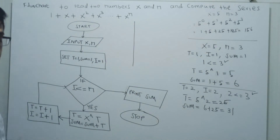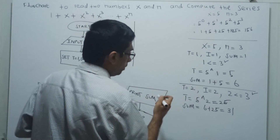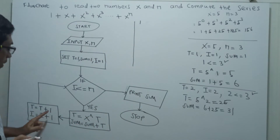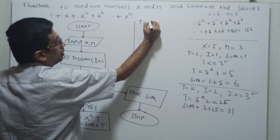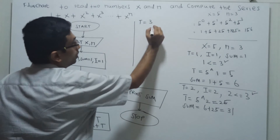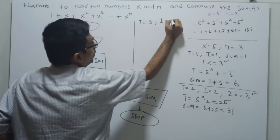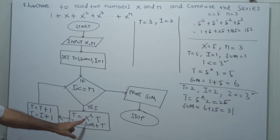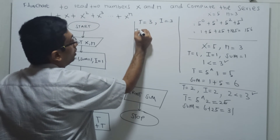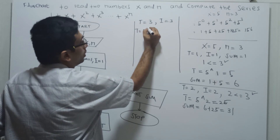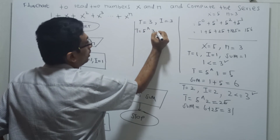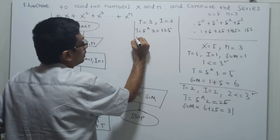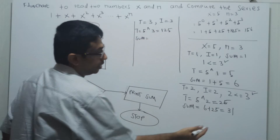Now going for the third iteration. Incrementing t by 1 and i by 1: t equal to 3 and i equal to 3. t equal to x power t, so t equal to 5 power 3, which is equal to 125. Sum equal to existing sum 31 plus 125.